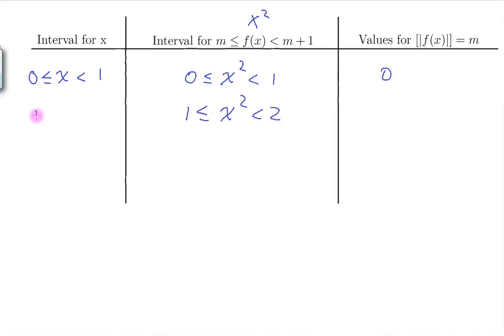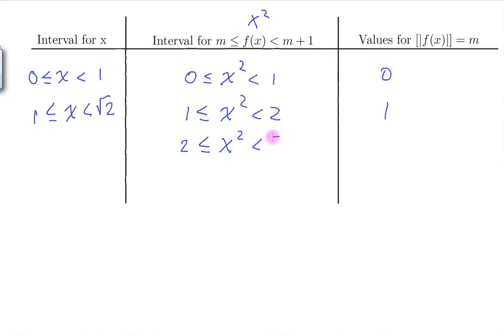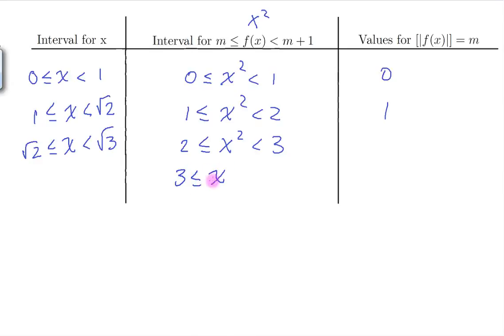We continue: for x squared to equal 2, x has to be square root of 2. Then for x squared to equal 3, x has to be square root of 3. So our intervals go: 0 to 1, 1 to square root of 2, square root of 2 to square root of 3, and square root of 3 to 2.